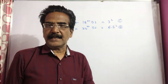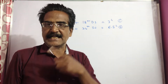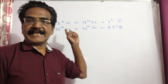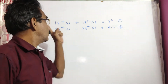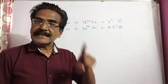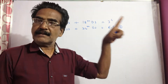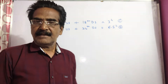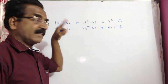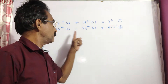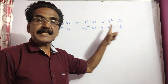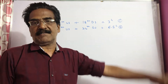Hi friends. Good morning. Please look at the next problem. A boat can travel 12 kilometers upstream plus 18 kilometers downstream in 3 hours. Whereas the same boat can travel 36 kilometers upstream plus 24 kilometers downstream in 6.5 hours.